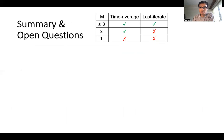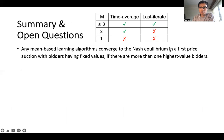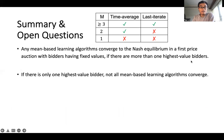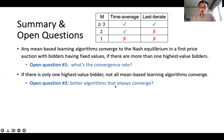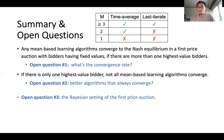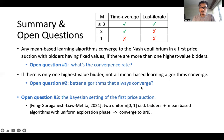In summary, we showed that any mean-based learning algorithm will converge to Nash equilibrium in the first price auction with fixed values, provided there is more than one highest-value bidder. If there is only one highest-value bidder, not all mean-based algorithms converge. Open questions include: what is the convergence rate? Can we design better algorithms that always converge in that case? And can we study the Bayesian setting, relaxing the fixed value assumption? Some works consider two bidders with uniform IID valuations and restricted algorithm classes, but the general case remains an interesting future direction.